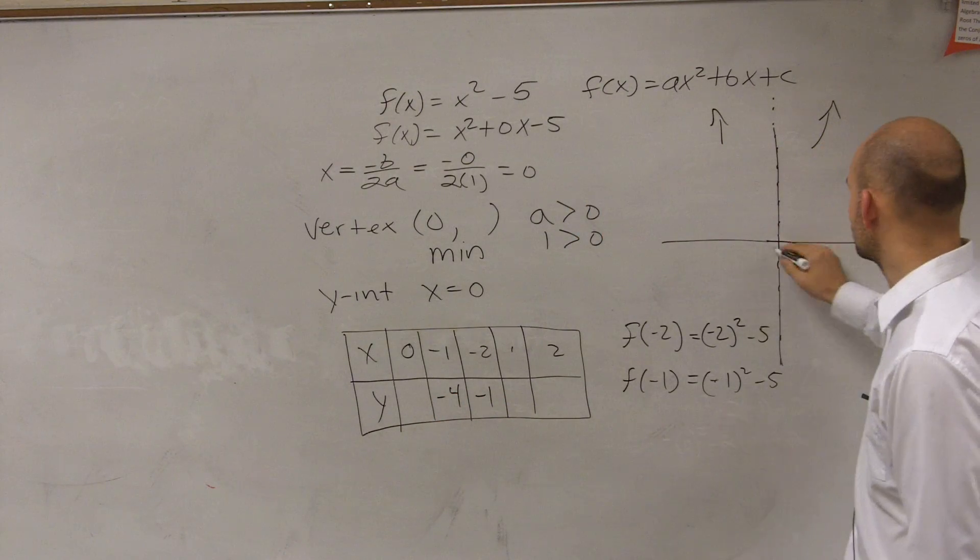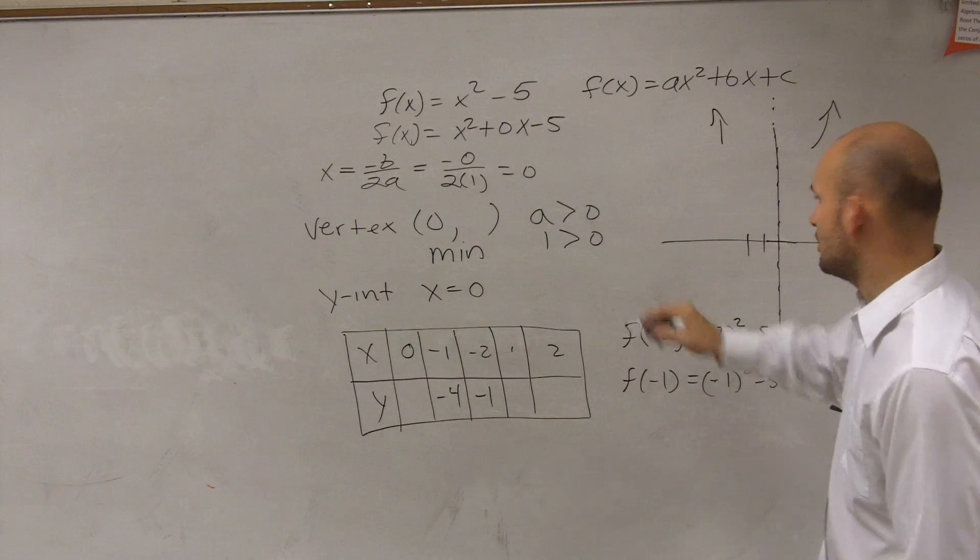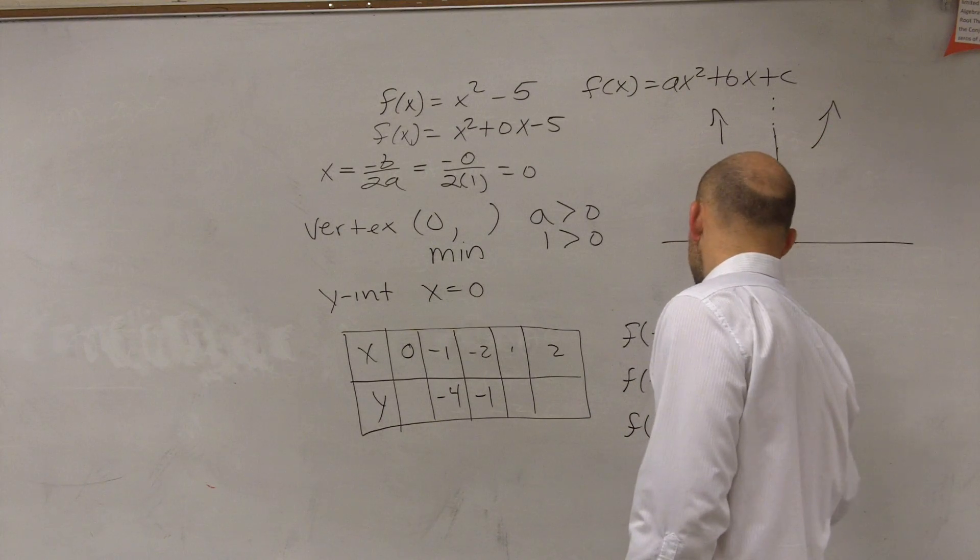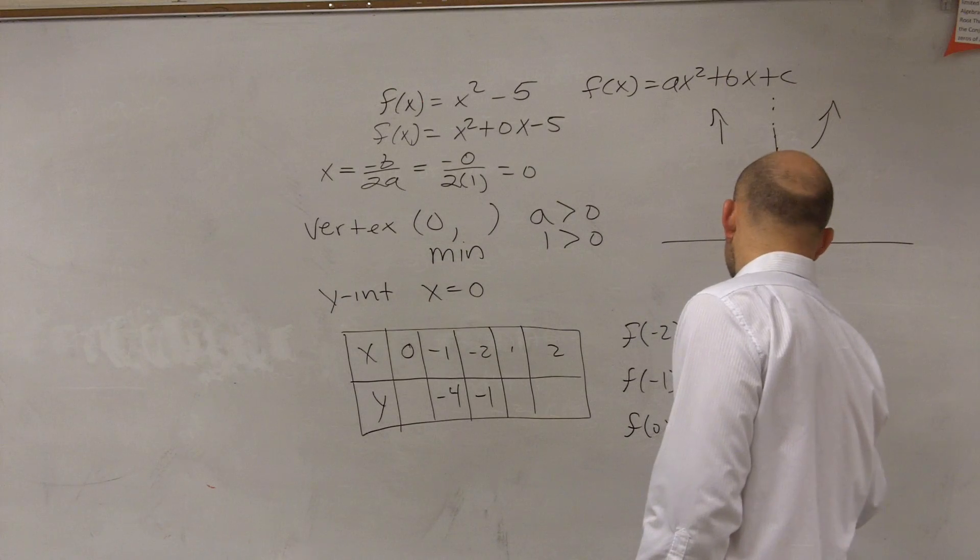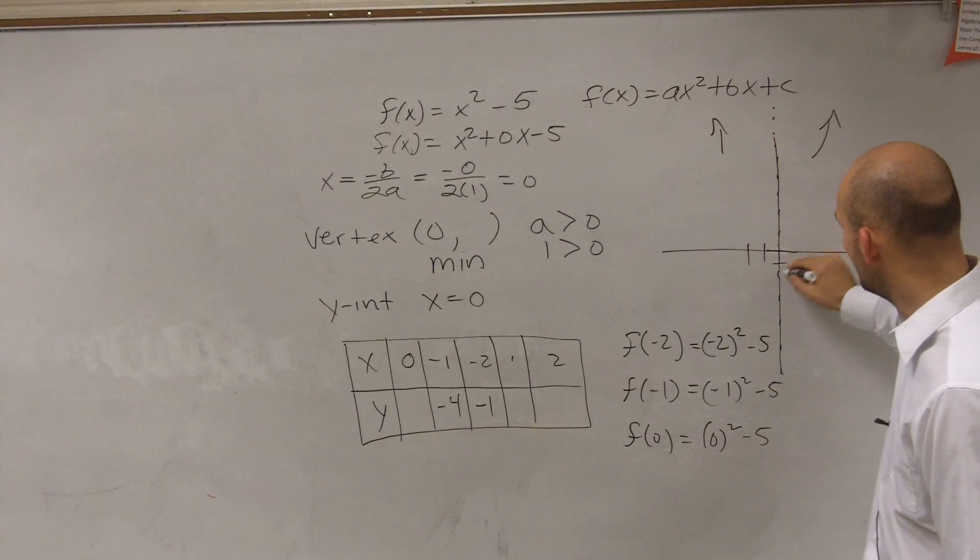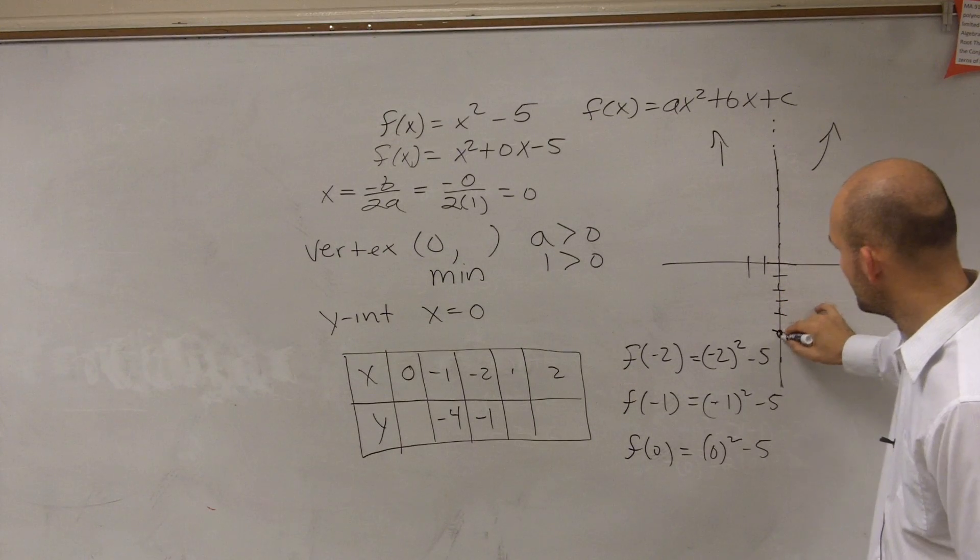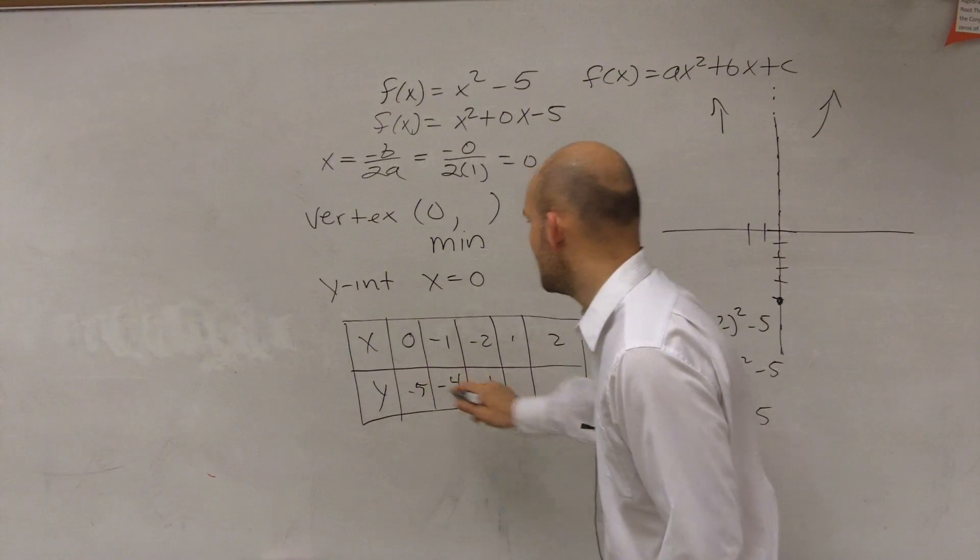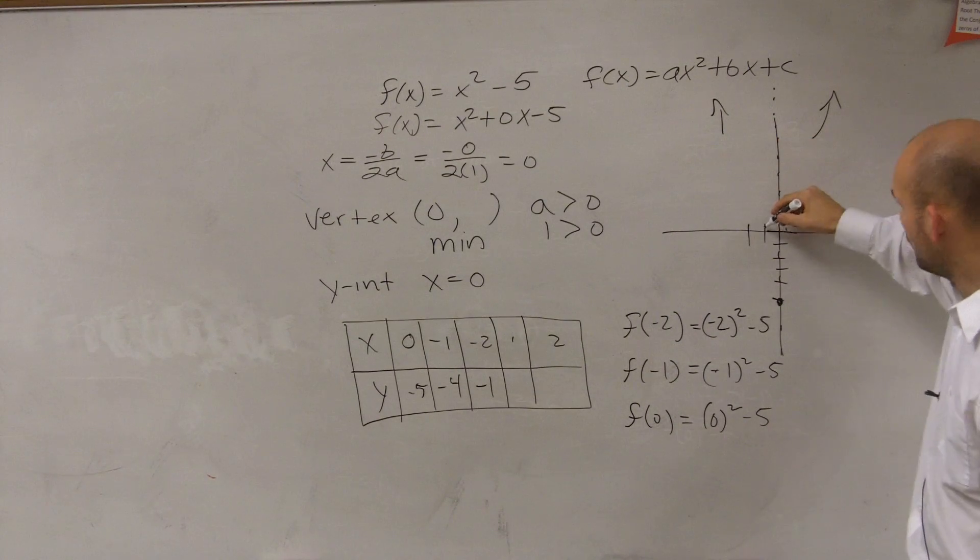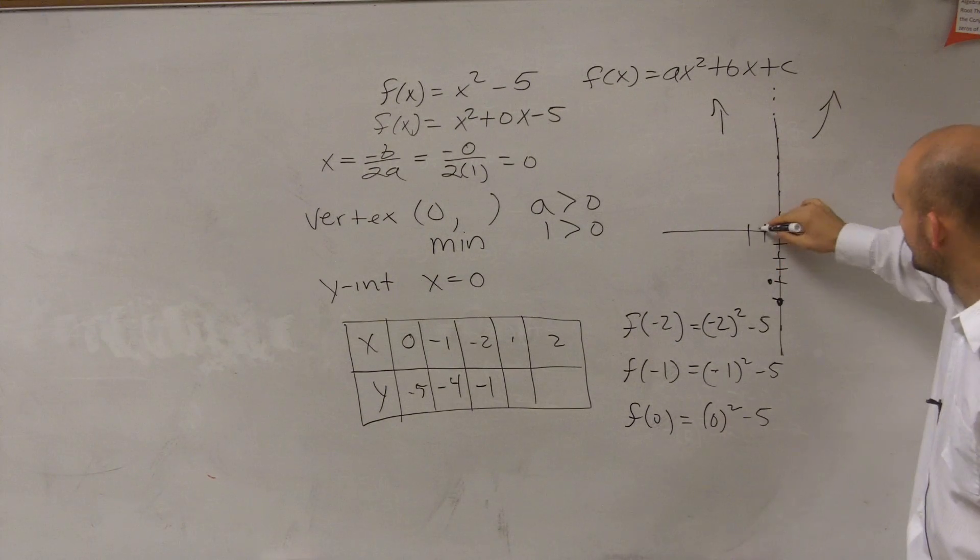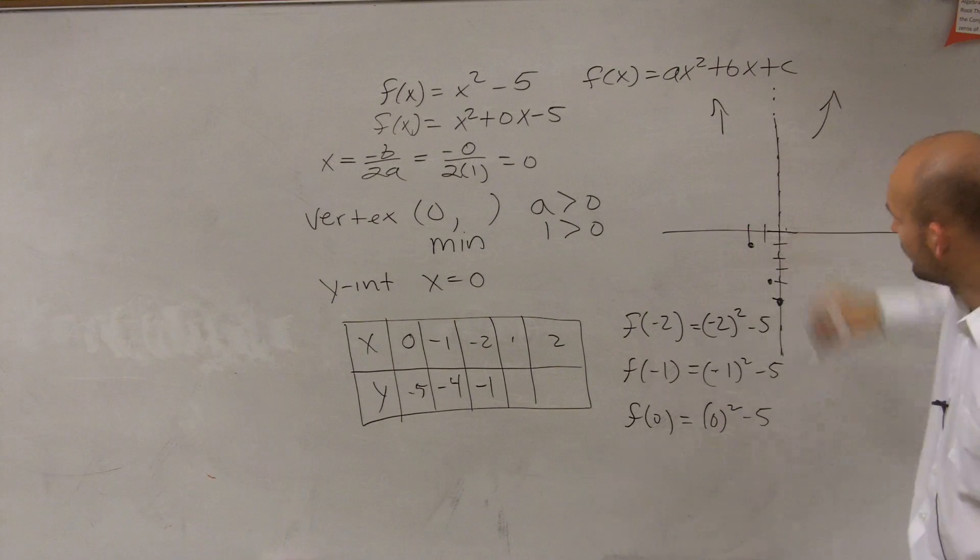So let's go and plot those two points. So at 0, I forgot I should definitely do 0, because that's my vertex. So we have 0 squared minus 5, which is at negative 5. So at 0, I have negative 5. At negative 1, I have negative 4. At negative 2, I have negative 1.